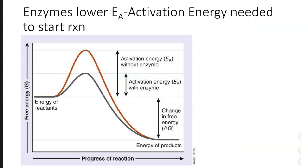The way that enzymes help to speed up the reaction is by lowering the EA. EA stands for activation energy, and activation energy is what you need to start the reaction. So let's say you are on a swing — that's a great example.